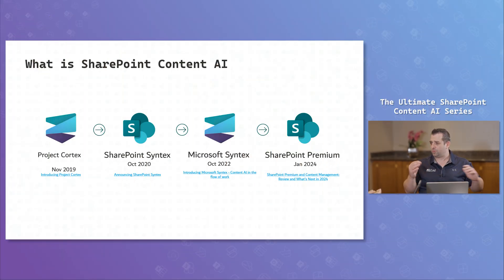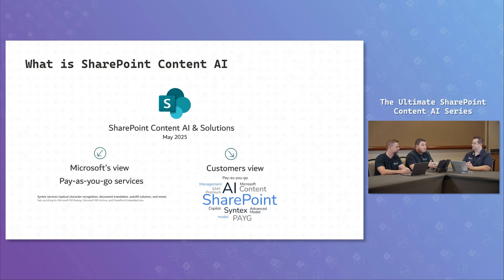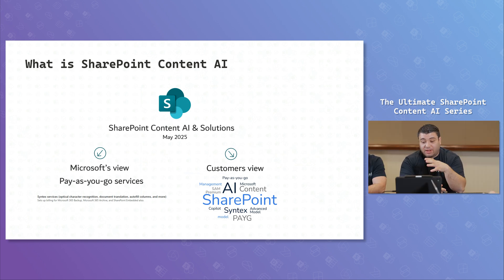Drew mentioned an evolution, and there's a slide that shows where we've come from. We started with Project Cortex — a big shock when launched because AI wasn't that common and people got scared when you mentioned SharePoint and AI together. Then came SharePoint Syntax, then Microsoft Syntex, which was a big boom everyone loved. Then it shifted to SharePoint Premium. After discussions with Microsoft, we've now landed on SharePoint Content AI — it's just part of SharePoint, no extra premium layer.